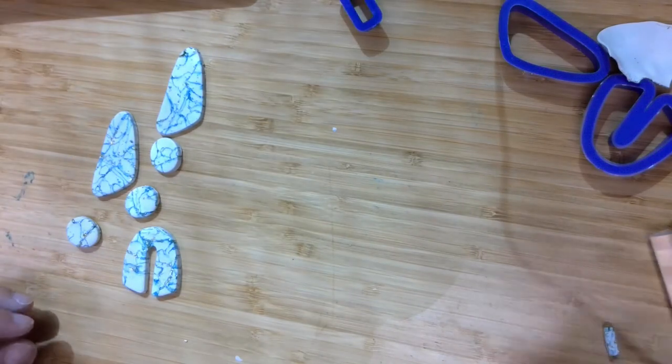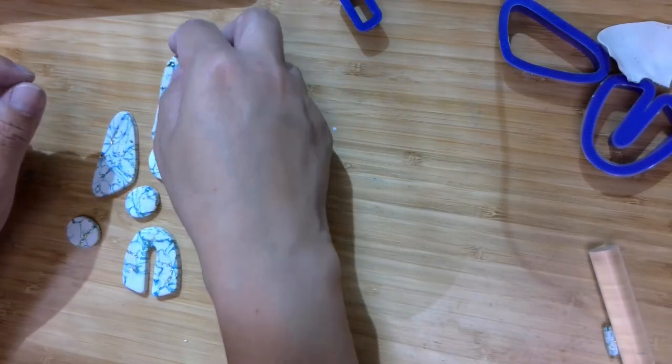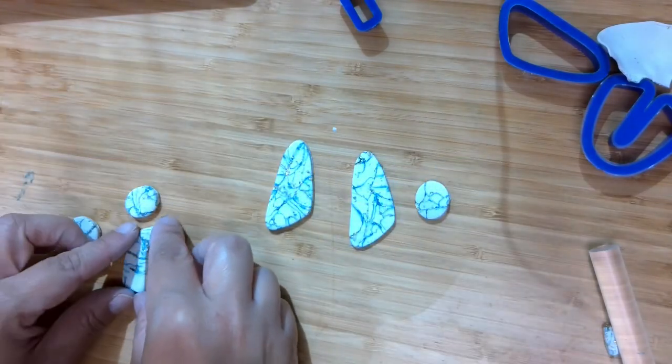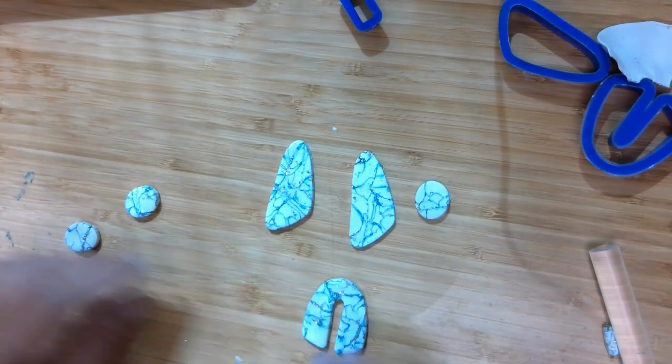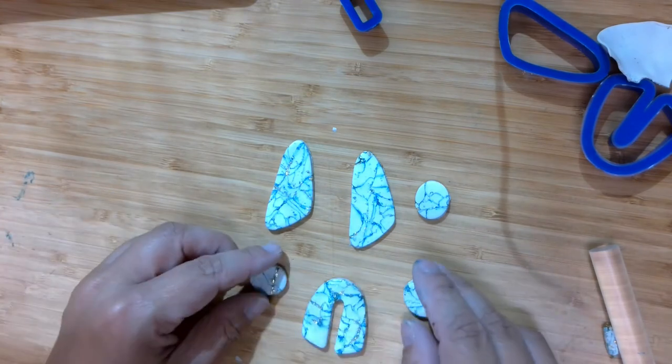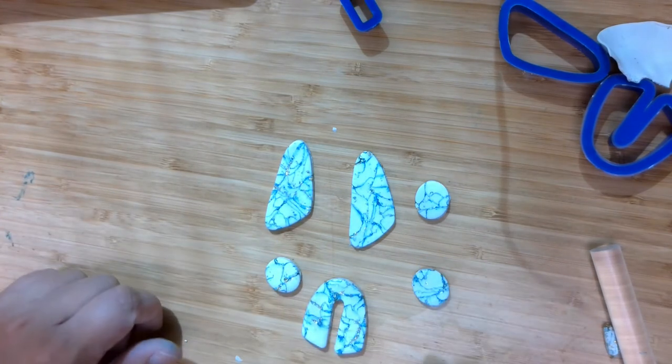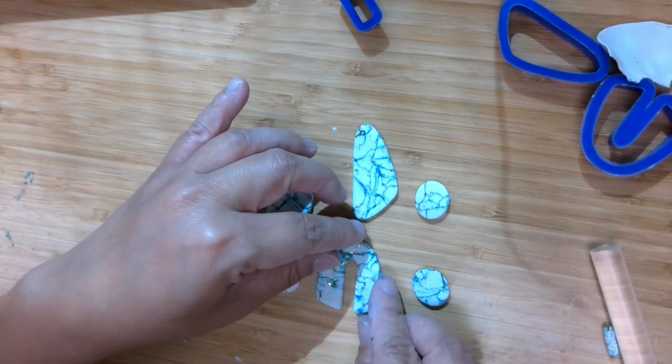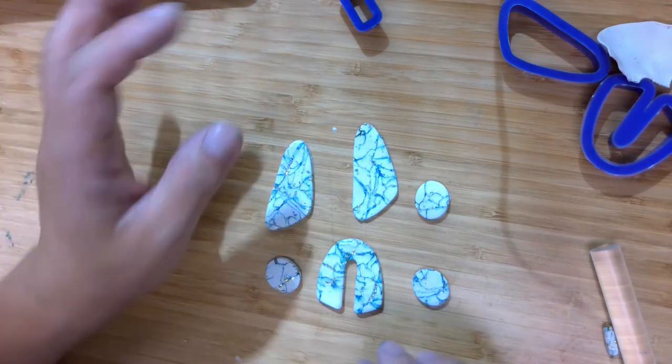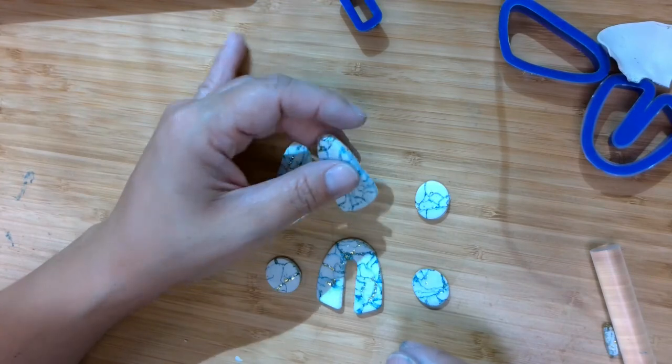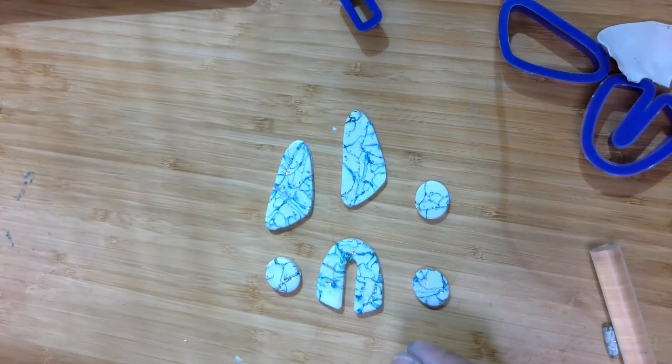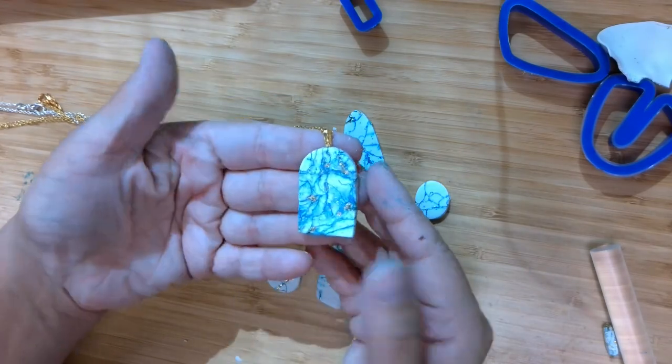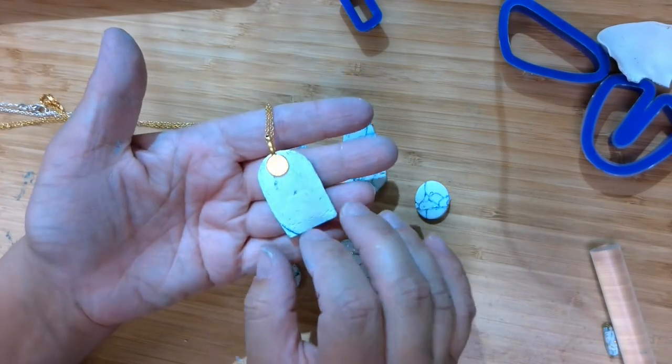All right, so now you just need to decide what you're going to do with your pieces. However, you can bake all of this before adding any of the findings on. So again, it is 275 degrees and 15 minutes for every quarter inch of thickness. And this is about a quarter inch. So then once that is all done and out of the oven, you can add your findings.